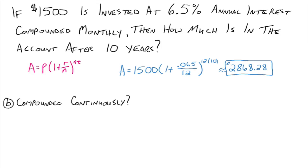All right, so now what about compounded continuously? All right, so now we're using the A equals P times e to the rt formula for the continuous compounding. All right, so A equals 1,500 times e to the r, which would be 0.065 times t, which is 10.